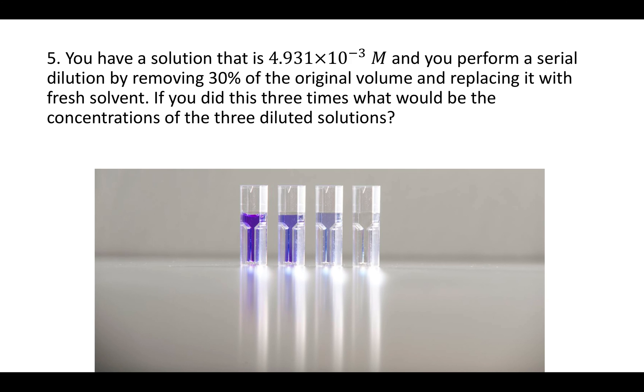Question 5 says you have a solution that is 4.931 times 10 to the negative third molar, and you perform a serial dilution by removing 30% of the original volume and replacing it with fresh solvent. If you did this three times what would be the concentrations of the three diluted solutions?